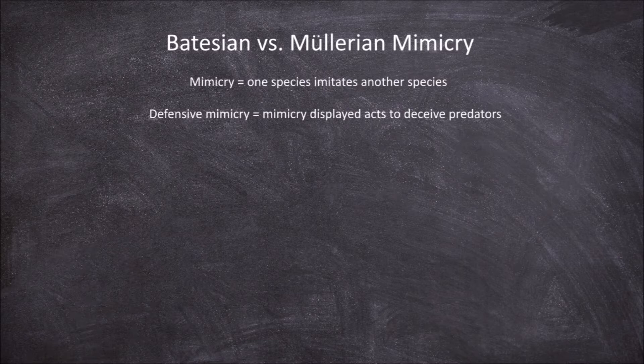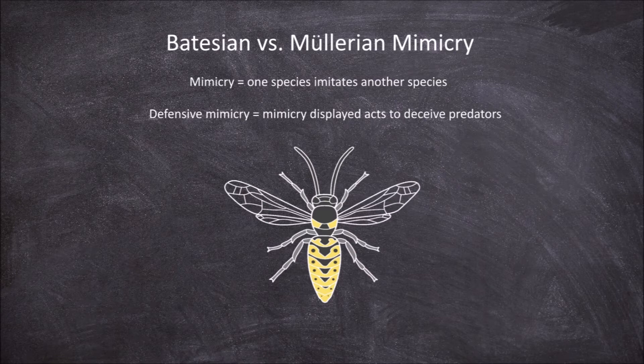To see the difference between these two forms of mimicry we're going to look at a model species, the common wasp. The wasp has adapted contrasting yellow and black colouration to warn potential predators that it is unpalatable.